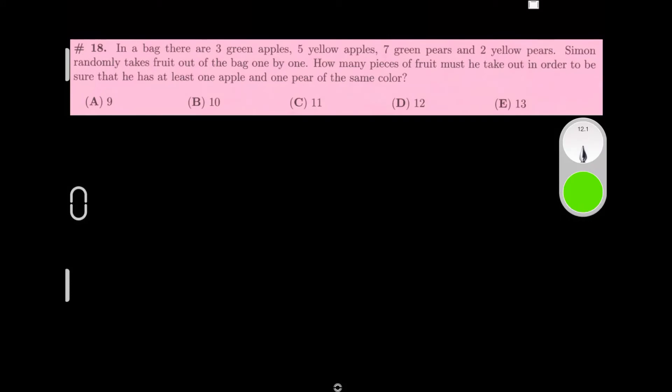In a bag, there are 3 green apples, 5 yellow apples, 7 green pears, and 2 yellow pears. Simon randomly takes fruit out of the bag one by one. How many pieces of fruit must he take out in order to be sure that he has at least one apple and one pear of the same color? There's two ways you can do this. He can take out 7 green pears and 3 green apples, one of those, or he can do 5 yellow apples and 2 yellow pears. Because he said he's going to take out randomly, and he wants to make sure if he takes out this amount, for no doubt he will have a pear and an apple of the same color. For this, we have to do the worst case scenario.